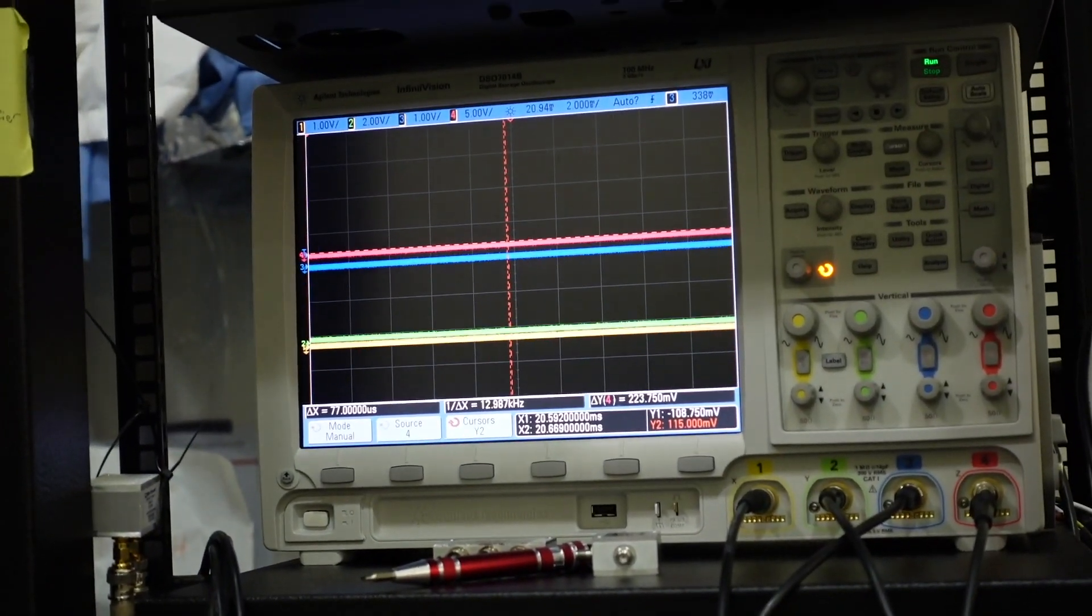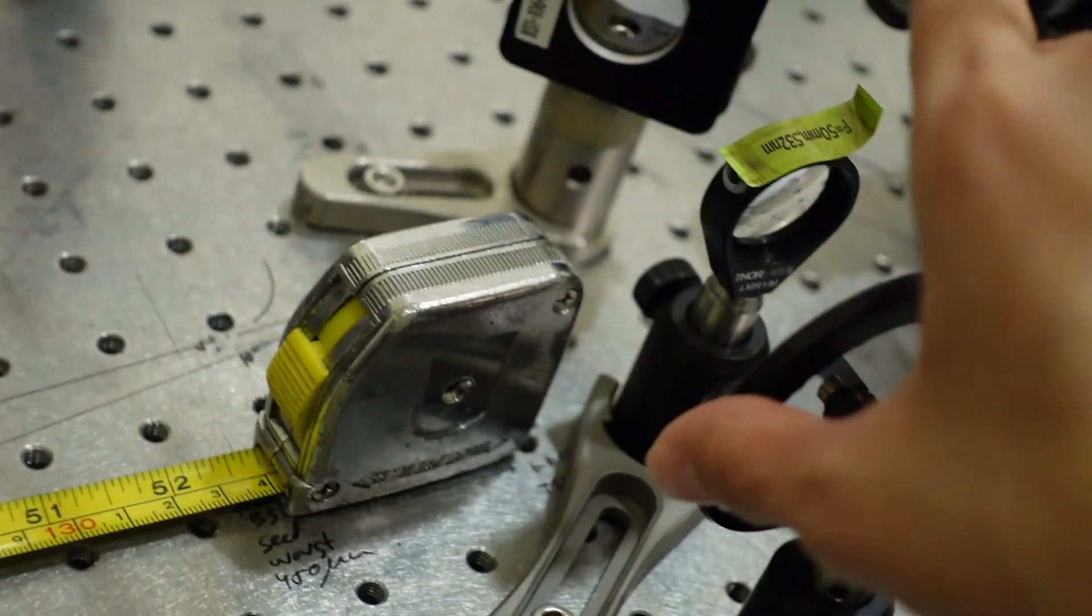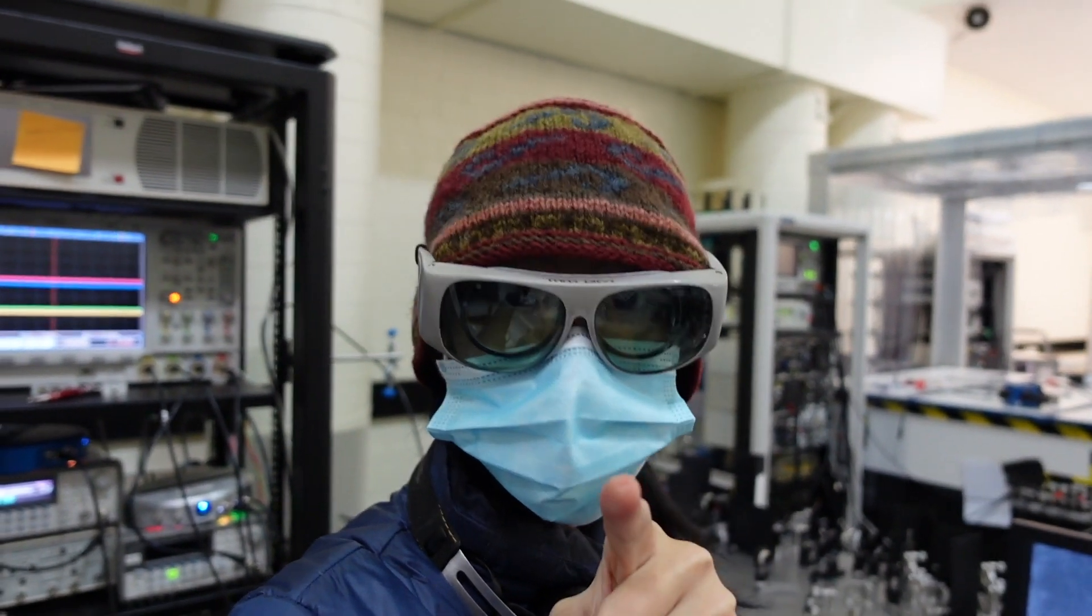You can see the green trace going up and down as I move this wheel left and right. That's all I'm doing here. And that is what an ND filter really looks like.